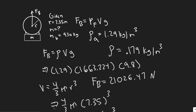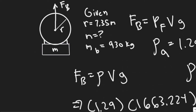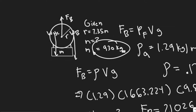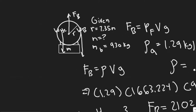Now we draw the free body diagram of all the other forces acting on our system. We know that the helium is going to have some mass, so we have the weight due to the helium (W_HE), the weight due to the balloon structure, and the weight due to the cargo (W_C). All forces are along the y-axis.